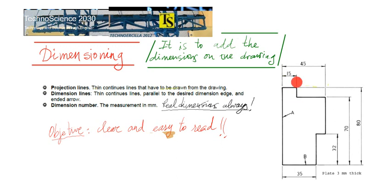Dimensioning is to add the dimensions on the drawing so that you give more information. You give how big the object is. The main objective for dimensioning is to give a very clear and easy to read drawing. So you need to make sure that everything is clear and you can read it.